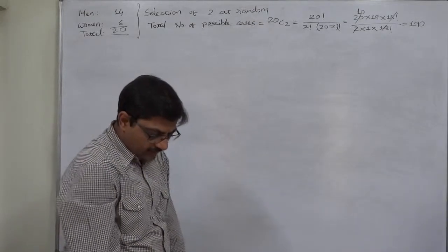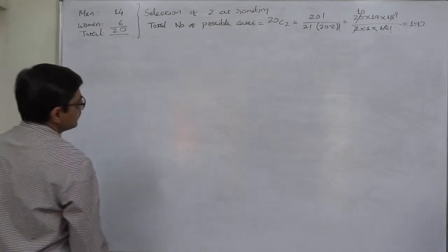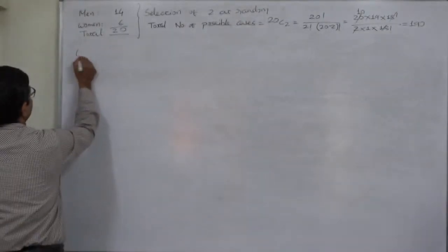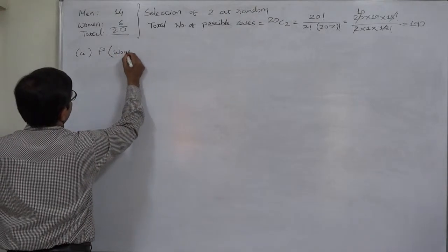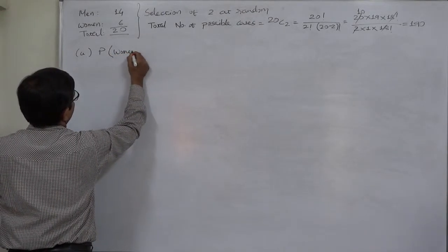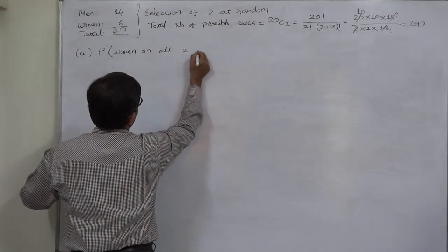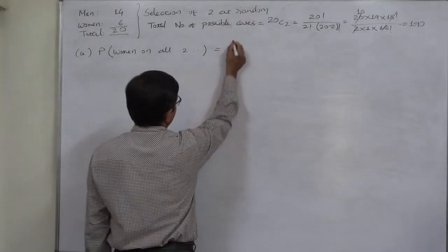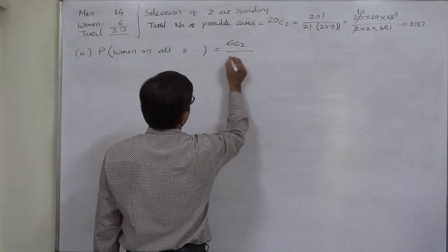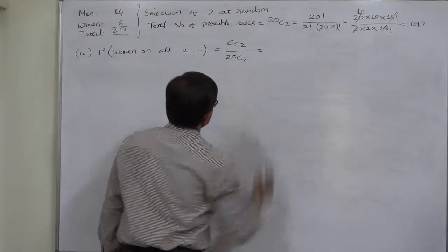Now the first sub-question is women will fill both the positions. That means both the positions are filled by women. Probability of women on all two positions. So the favorable cases will be 6C2 divided by total number of cases 20C2.